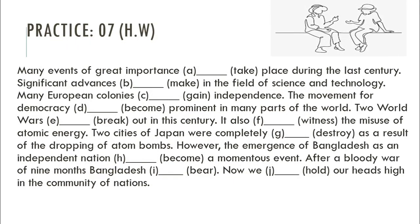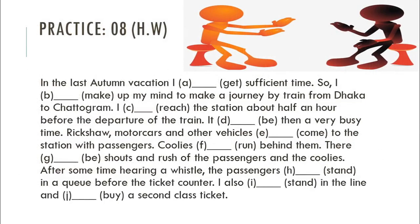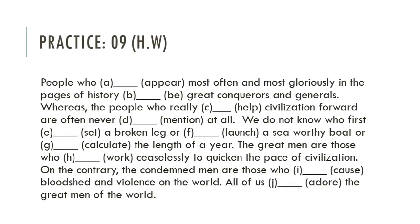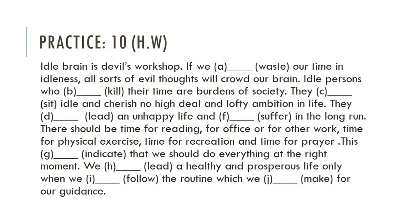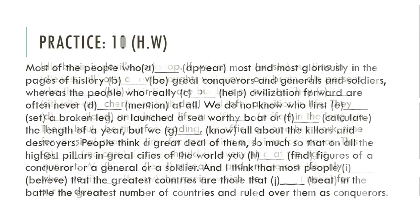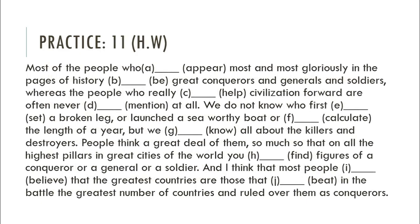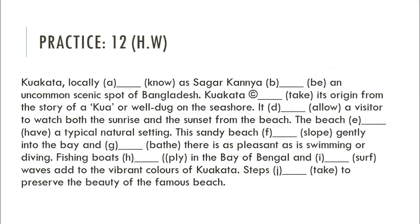Here are some additional practice exercises for you to solve on your own. Practice seven: 'Many events of great importance dash take place during the last century.' Practice eight: 'In the last autumn vacation, I dash sufficient time.' Practice nine: 'People who dash appear most often and most gloriously in the pages of history, dash.' Practice ten: 'Idle brain is the devil's workshop. If we dash waste our time in idleness, all sorts of evil thoughts will crowd our brain.' Practice eleven: 'Most of the people who dash appear most gloriously in the pages of history, dash.' Try to solve them by yourself.